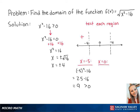Now we'll test when x is between negative 4 and 4 by plugging in 0. So we get 0 squared minus 16, which is equal to negative 16, which is less than 0. So there will be a negative number underneath the square root when x is between negative 4 and 4.